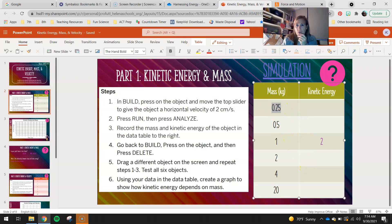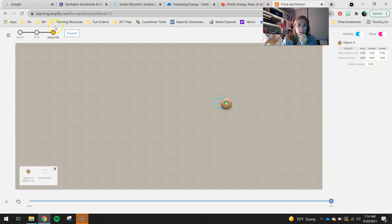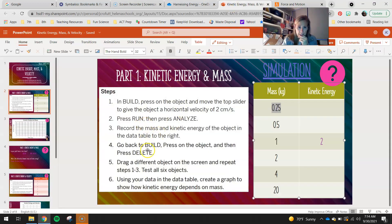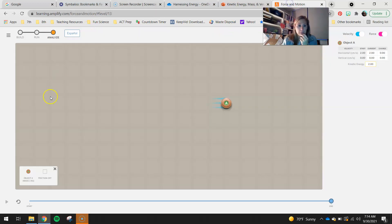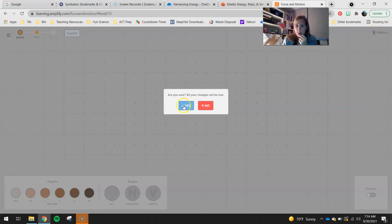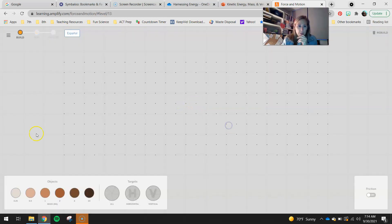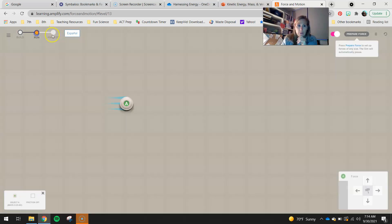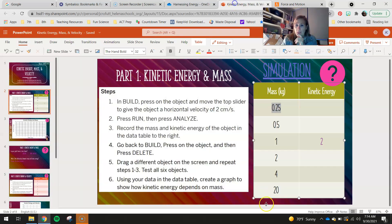Then you guys will do the same thing with the 0.25 kilogram puck. So you guys will go to build. Make sure I didn't miss anything. Go back to build. You guys are going to restart and you're actually going to get rid of this object. And then you guys can circle through and use the 0.25. Set your horizontal velocity to two. Hit run. Then hit analyze and check your kinetic energy. So you're going to collect that data for all seven of these masses.